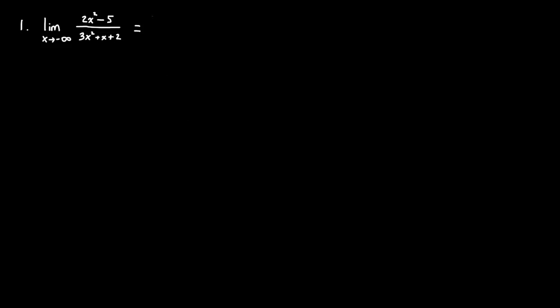What I'm doing is showing you why mathematically that is true. I'm going to take the limit as x approaches negative infinity. We're going to look at the highest degree in the denominator, which is x squared. I'm going to take the numerator and the denominator and multiply them by one over that highest degree in the denominator, which is one over x squared.